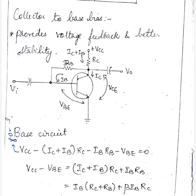The topic is collector to base bias in BJT. So here we have a feedback path between base and collector.